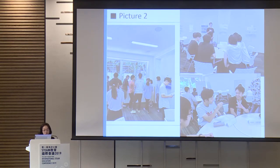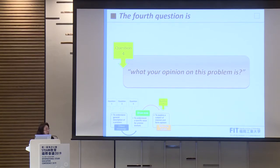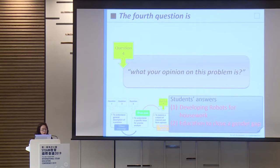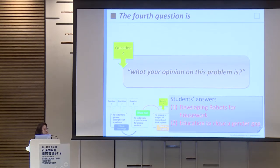The fourth and last question asks: what is your opinion on this problem? This serves as a summary of the theme. Students' answers were very interesting — there are three majors at the institute: engineering, information engineering, and humanities. Their answers differed depending on their field of interest. When we shared the answers, we recognized the differences between knowledge and interest fields. I think this is a very important point of the discussion program.